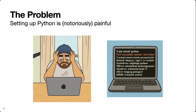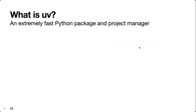Lucky for us, today there is a tool that makes this process much easier. That tool is called uv. To quote their documentation, it's an extremely fast Python package and project manager. In other words, it's a tool that allows you to manage your Python packages, manage your project dependencies, manage multiple projects, and make your projects reproducible. There's a rich set of functionality built into uv, but the thing that first caught my attention is how fast it is.